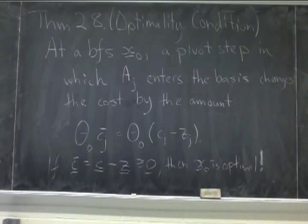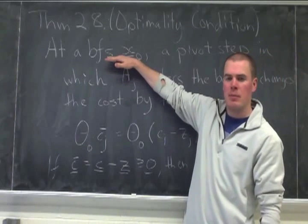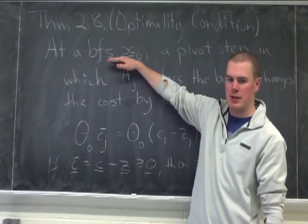So this theorem, it's 2.8 in the textbook. It's our optimality condition. So just remember that this is our optimality condition. What we've done is we've fixed a basic feasible solution, x0.